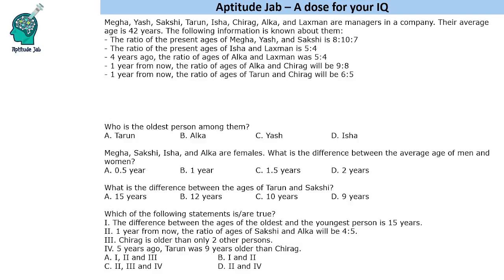Hello everyone, welcome to Aptitude Jab. This is a caselet which says that there are some managers in a company. Their average age is given to us and we are given certain information about these people and the ratio between their ages. Let us first write the names of these people.